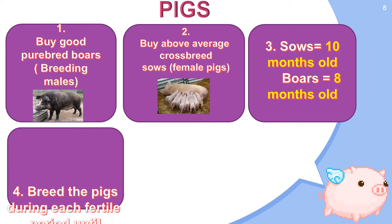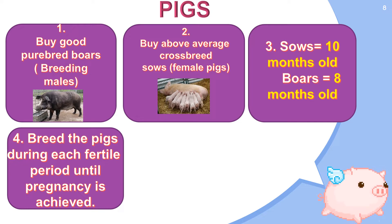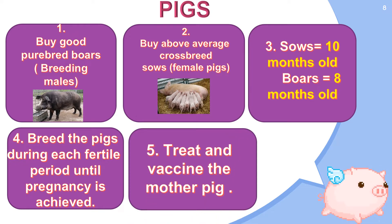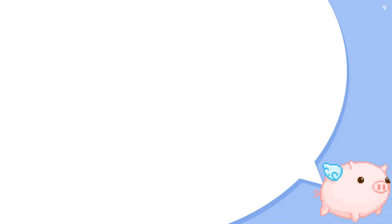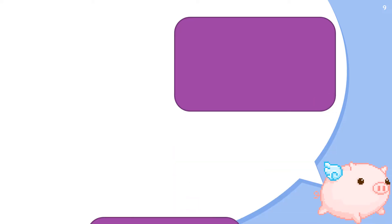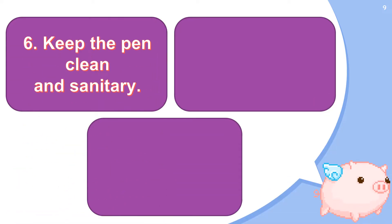For the fourth one, breed the pigs during each fertile period until pregnancy is achieved. For the fifth one, treat and vaccinate the mother pig for worms and lice before babies or piglets are born to prevent the newborns from being infected. For the sixth one, keep the pen clean and sanitary. Clean it regularly with a mild cleanser so that infection and disease will not spread from the pigs to the newborns.